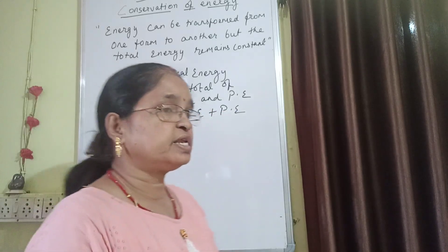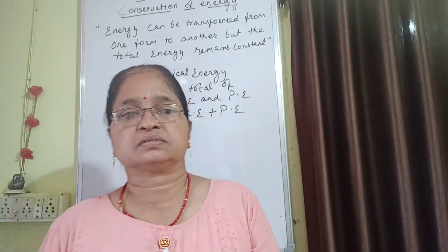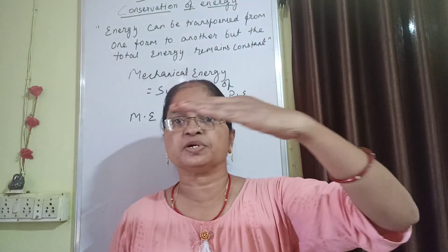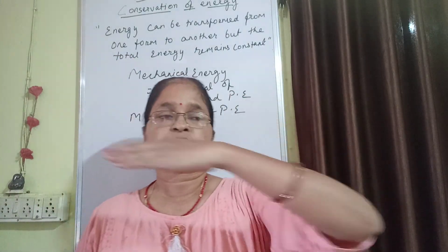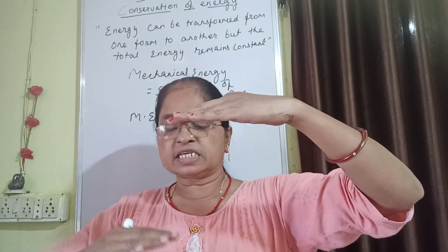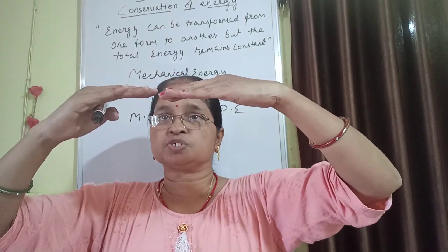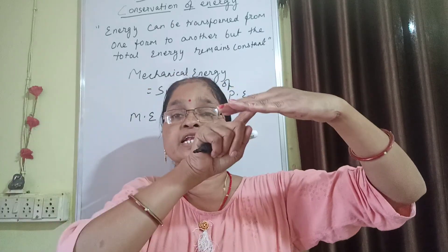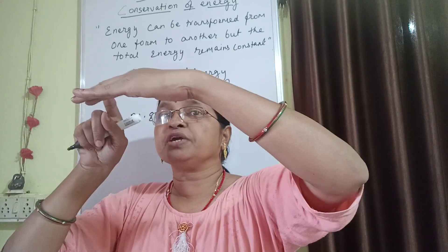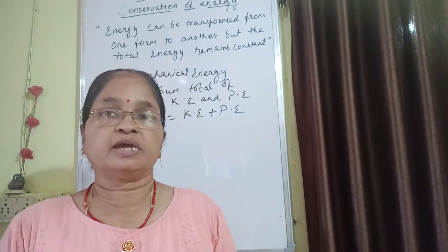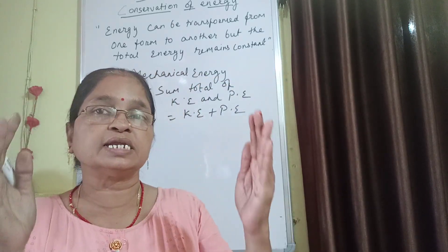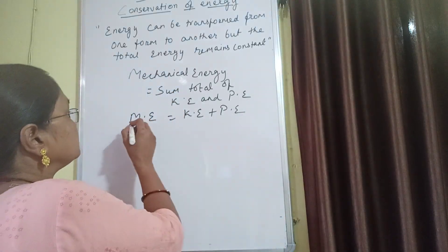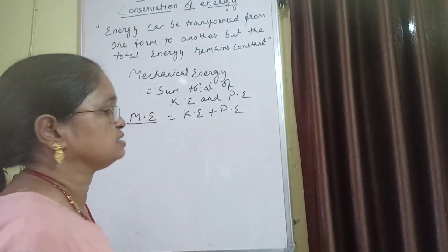A very common example is a flying aeroplane. It is at a certain height, meaning it has a position — that gives it potential energy. And it is moving — that gives it kinetic energy. When the total energy is considered, that energy is nothing but mechanical energy.